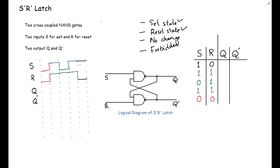First, let us apply S=1 and R=0. If we apply logic high at the S input and logic low at R, then if initially the output of the gate is 1, we get 1 AND 1 at the NAND gate, which gives 0. To understand this we also need to review the truth table of the NAND gate: inputs 0,0 → output 1; inputs 0,1 → output 1; inputs 1,0 → output 1; inputs 1,1 → output 0.